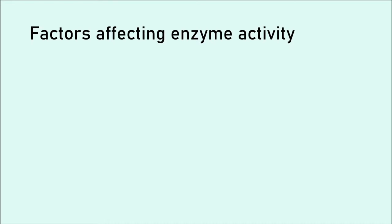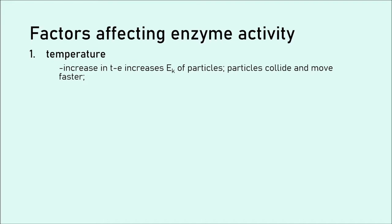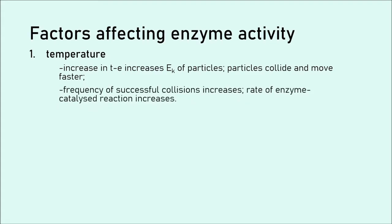Now we've seen how enzymes work. Let's talk about some other factors, some external factors that affect their activity. We did look at this at GCSE very briefly. Now let's go into a bit more detail. First of all, temperature. At GCSE, of course, we talked about enzymes denaturing when temperature increases and so on. Now we have to be specific. An increase in temperature causes the kinetic energy of the particles to increase. As a result of that, the particles collide and move faster. Kinetic energy increases. Therefore, they move more, they move faster, they move with more energy. That directly means that they're going to collide faster and more frequently. Our frequency of successful collisions increases. Therefore, the rate of enzyme catalyzed reaction also increases.